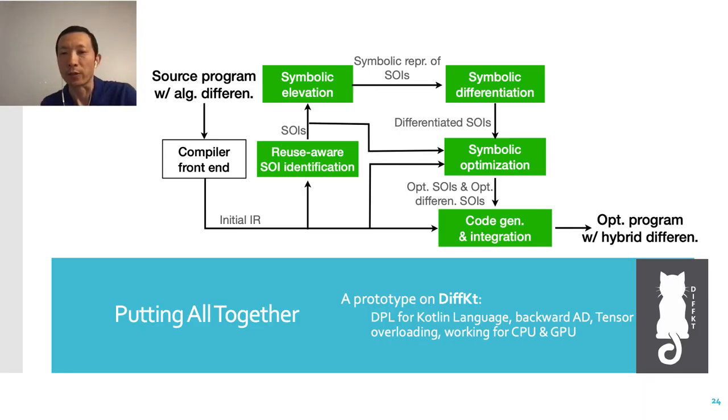When these techniques are put together, we get an AD optimizer. It takes the primal code as input, identifies SOIs through the reuse-aware algorithm, raises them to the symbolic level, and conducts symbolic differentiation based on the phi calculus, and generates the optimized code with hybrid differentiation.